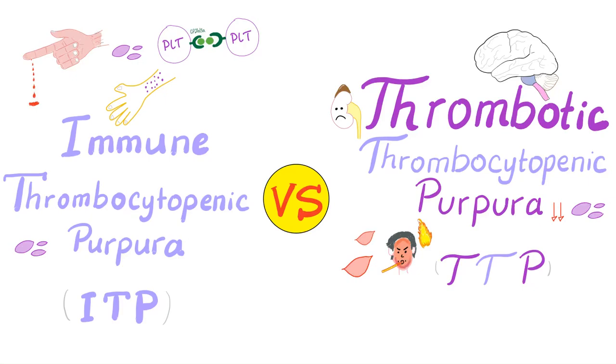Hey, it's Medicosis Perfectionitis, continuing our playlist on bleeding and coagulation disorders. Today, we'll compare between immune thrombocytopenic purpura, or ITP, and thrombotic thrombocytopenic purpura, or TTP.